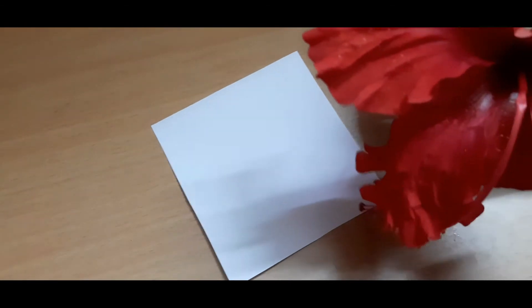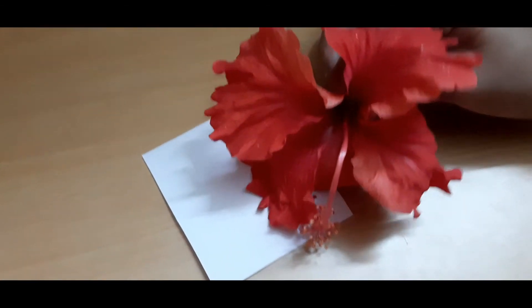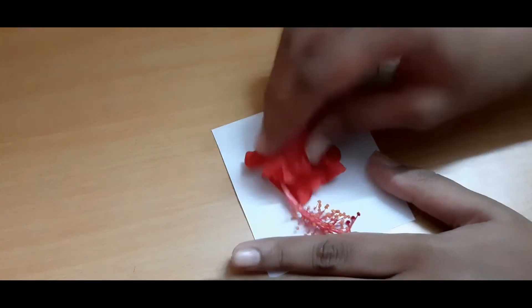To prepare the litmus paper, you need a small piece of paper and a hibiscus. Here I have my hibiscus, and now I'll gently rub the hibiscus on the piece of paper.